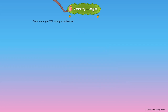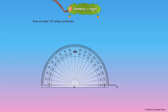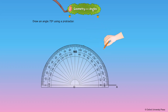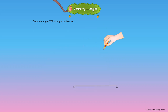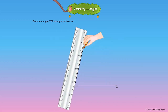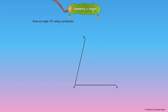Let's draw an angle of 75 degrees using a protractor. A: Draw a ray OA. B: Place the protractor on OA such that its midpoint is at O and the ray OA coincides with the 0 degree mark on the protractor. C: Mark a point B near the edge at 75 degrees, counting from the right on the inner scale. D: Remove the protractor and draw a ray OB using a ruler. Angle AOB is the required angle of 75 degrees.